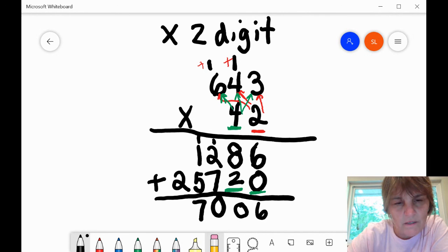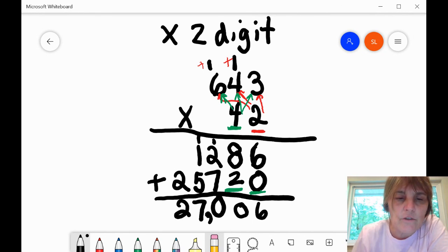No need to carry because it's a single digit. And then two plus nothing is two. Now we need to figure out where we place the comma. We go three over, one, two, three, and the comma goes right in front of that third digit. So our answer is 27,006.